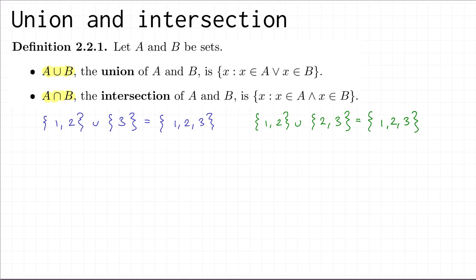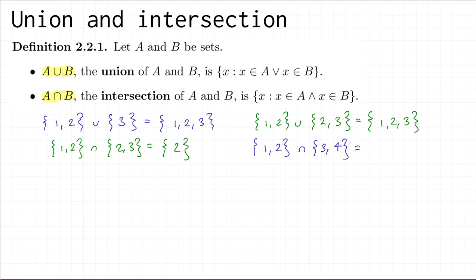Moving on to intersections, if we take {1, 2} intersect {2, 3}, this set is defined to be all the things which are in both of those sets. The only thing in both is the number 2, so the intersection is {2}. For a slightly different example, {1, 2} intersect {3, 4} — this time there are no elements in common between those two sets, so the intersection doesn't have any elements; that is, the intersection is the empty set.